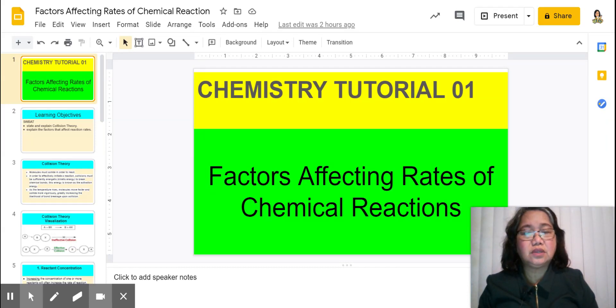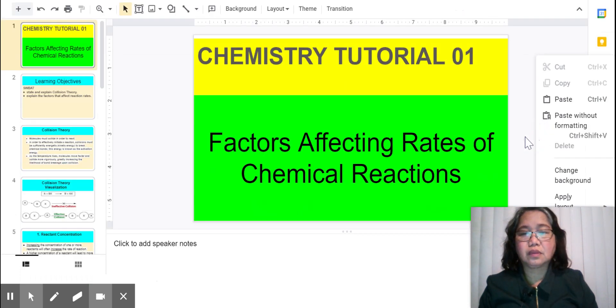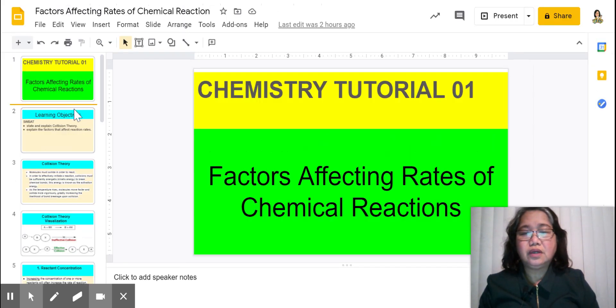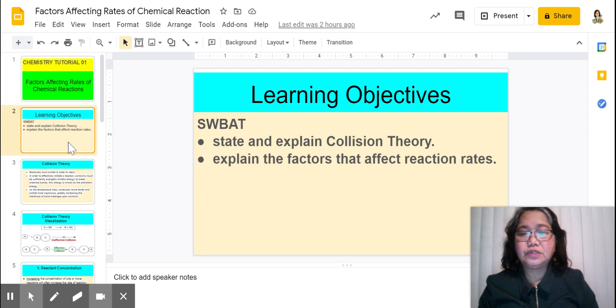So the topic today is all about factors affecting rates of chemical reactions. The learning objective for today is students will be able to state and explain collision theory, explain the factors that affect reaction rates.